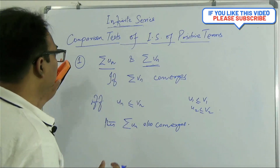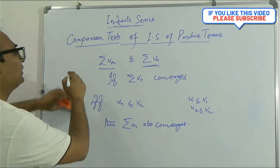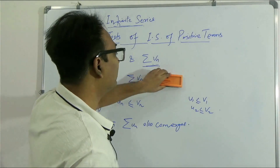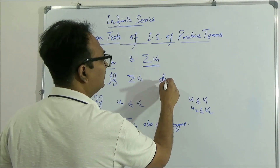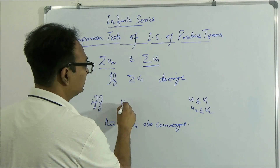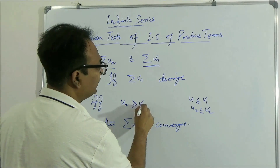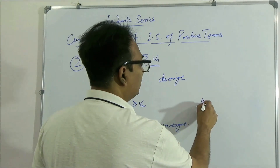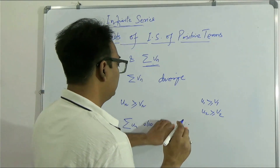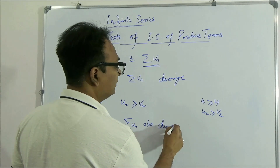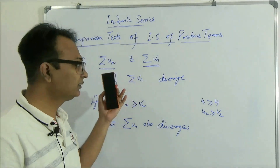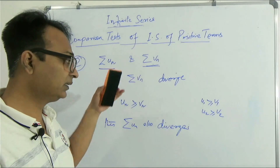The second comparison test is similar: if vn is divergent and if un ≥ vn — that is, each term un ≥ vn correspondingly — then un also diverges. The first test was for convergent series; the second test is for divergent series.